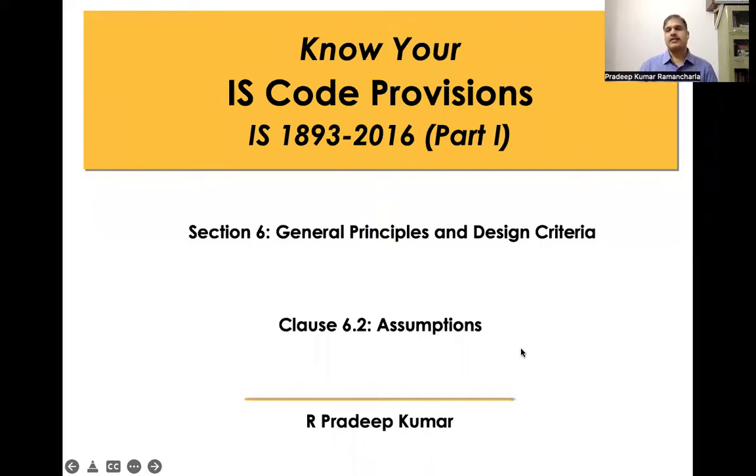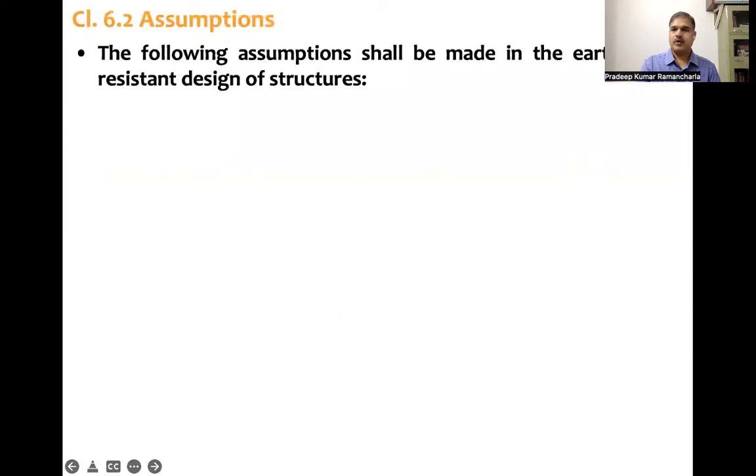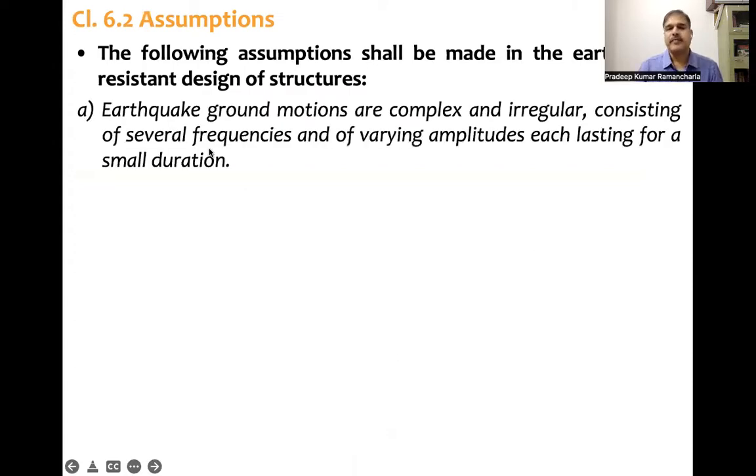Section 6, general principles and design criteria, in that 6.2 assumptions. What code says is the following assumptions shall be made in the earthquake resistant design of structures. The first one being, the earthquake ground motions are complex and irregular, consisting of several frequencies and of varying amplitudes, each lasting for small duration.